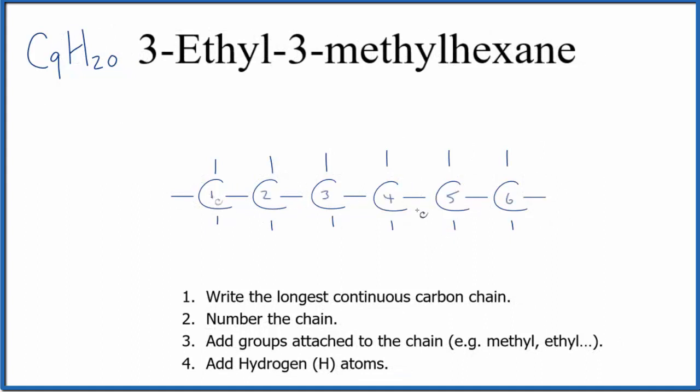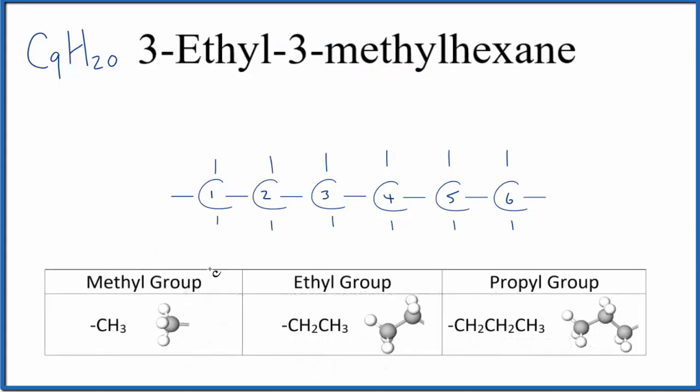Now let's number the chain. So what we'll do now is we'll attach the substituent groups. On the third carbon right here, this is the third carbon, we have a methyl group. So a methyl group, that looks like this. Methyl group is just CH3, carbon with three hydrogens. So let's put a methyl group on the third carbon right here.